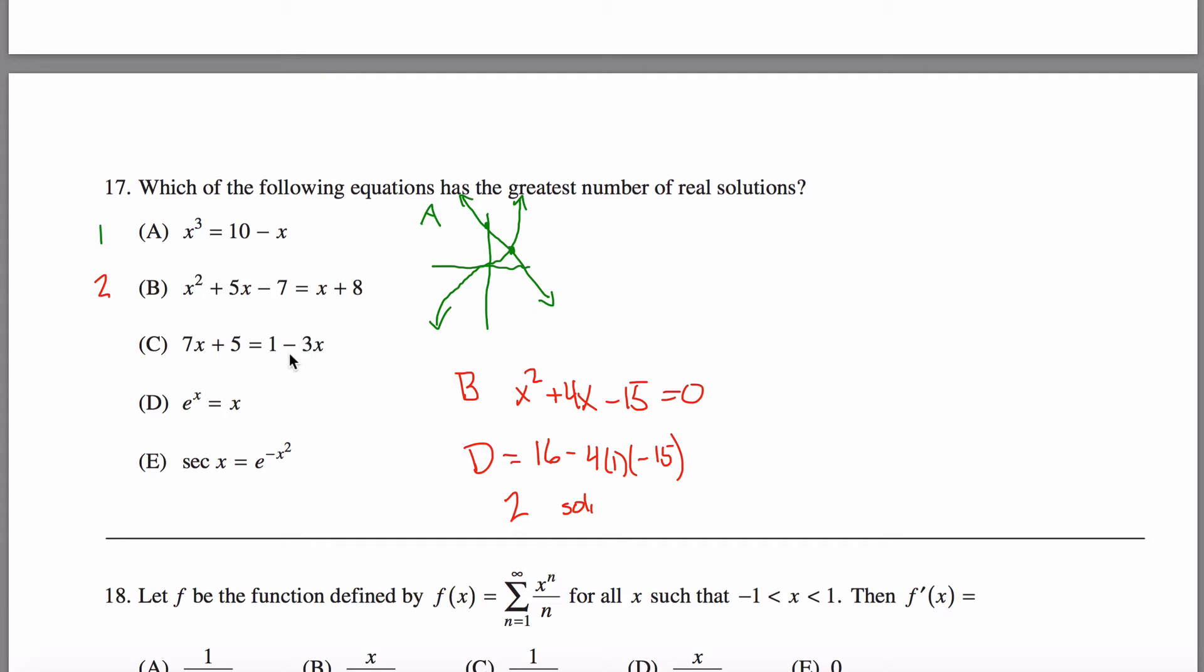C here. We just got a linear equation. If you felt like it, you could solve for x and find the solution. But I think it's fairly obvious that because it's a linear equation, you got two lines with different slopes. They're going to intersect in exactly one point.